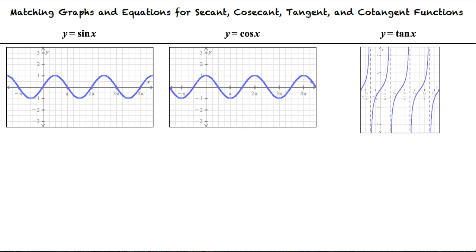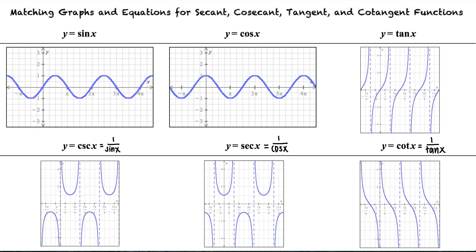We know that the co-functions are equal to 1 divided by the original functions. Since we now have expressions with x in the denominator, there will be certain locations where the graphs are undefined. These will be the asymptotes.